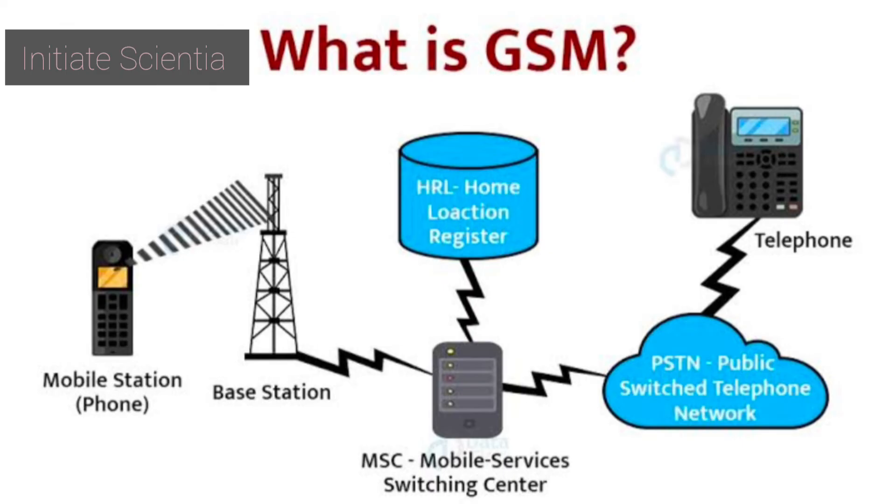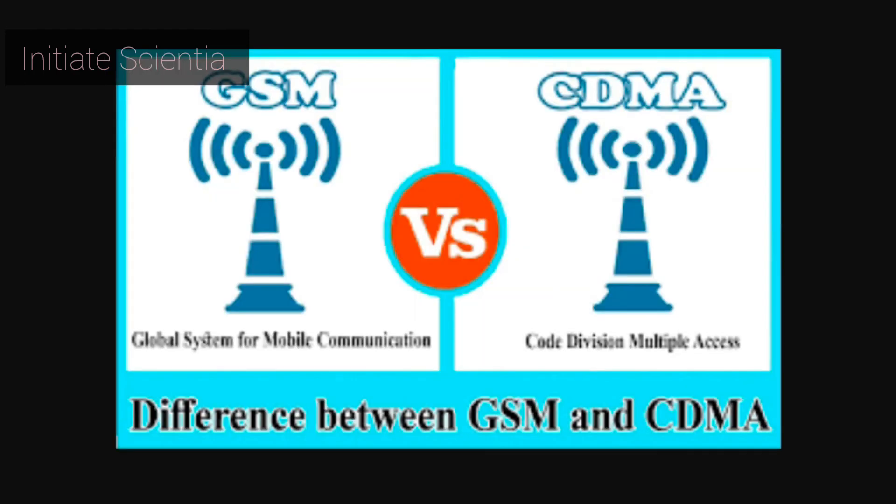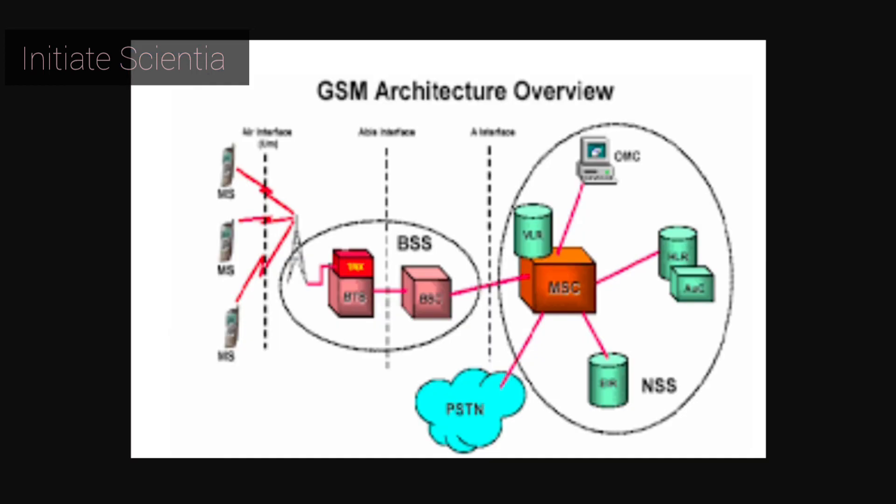Electronic interference. Because GSM uses a pulse transmission technology, it is known to interfere with electronics like hearing aids. This electromagnetic interference is why certain places like airports, gas stations, and hospitals require mobile phones to be turned off. Bandwidth lag.